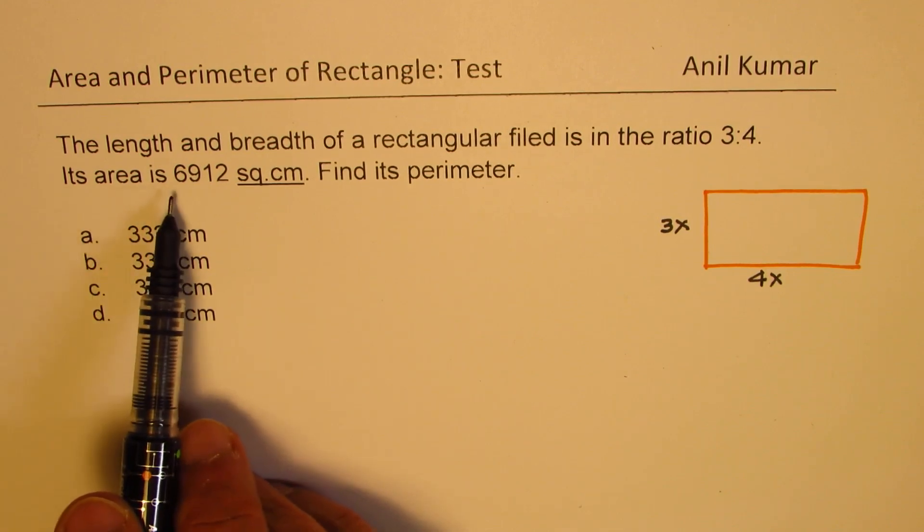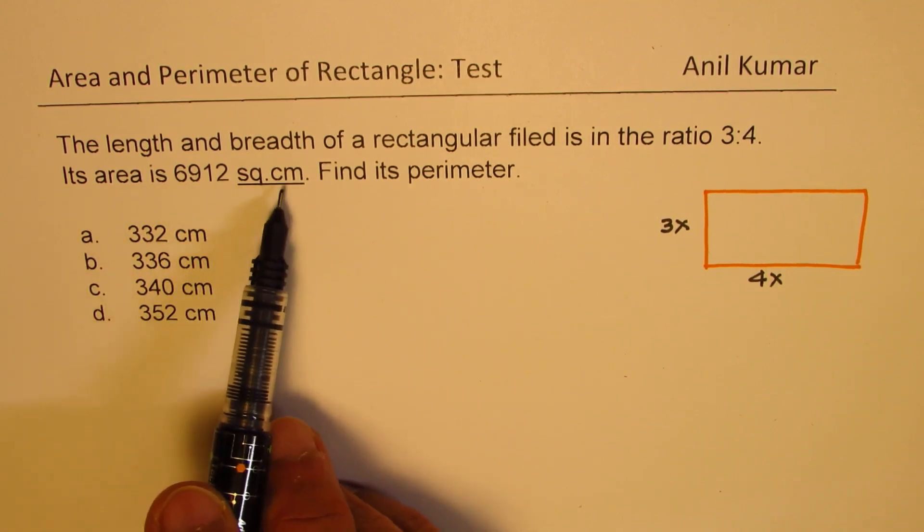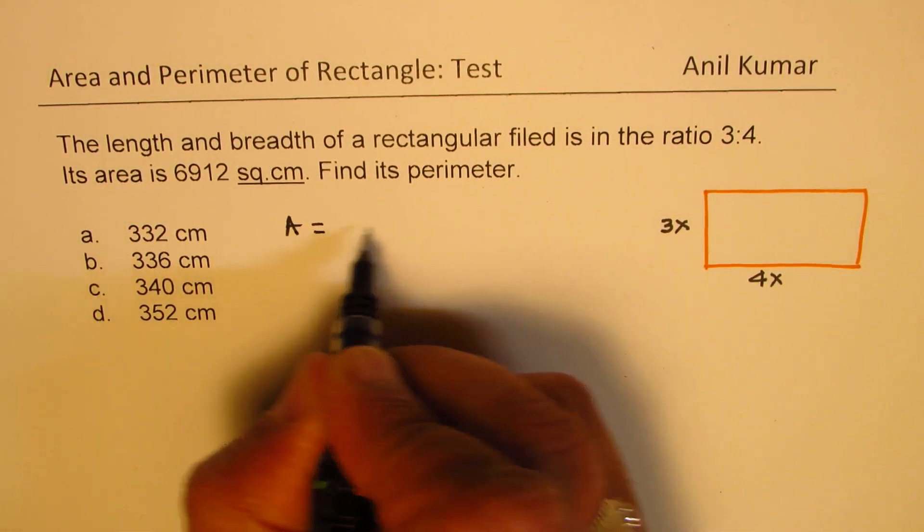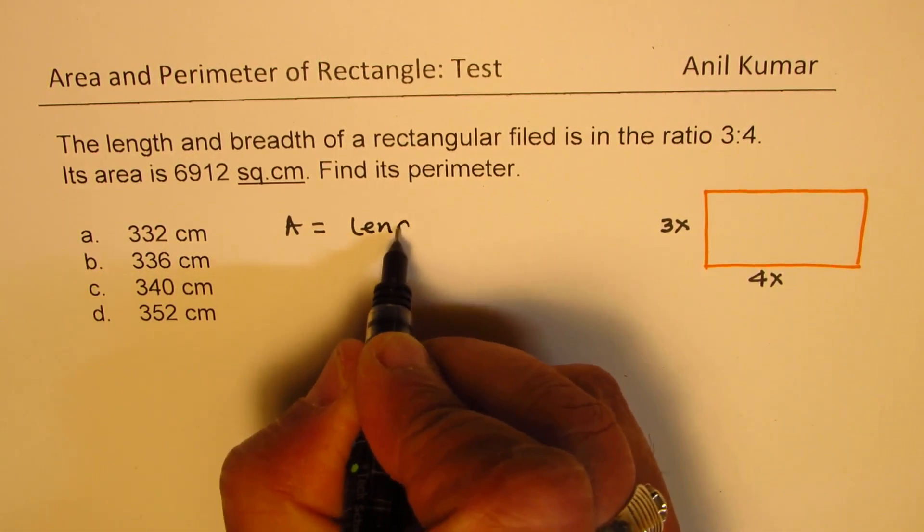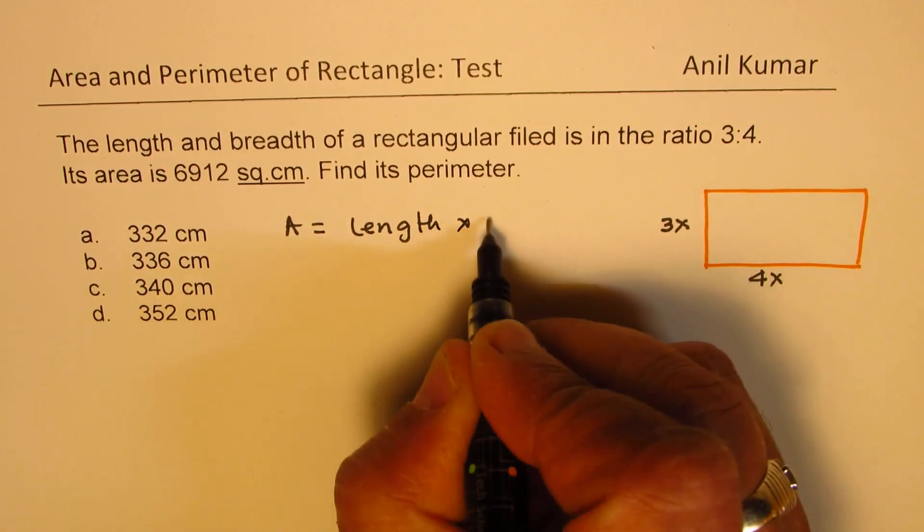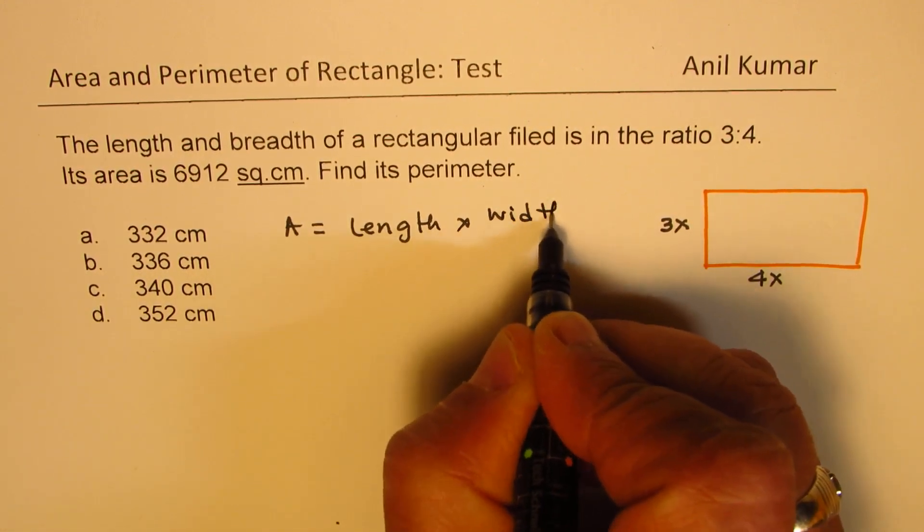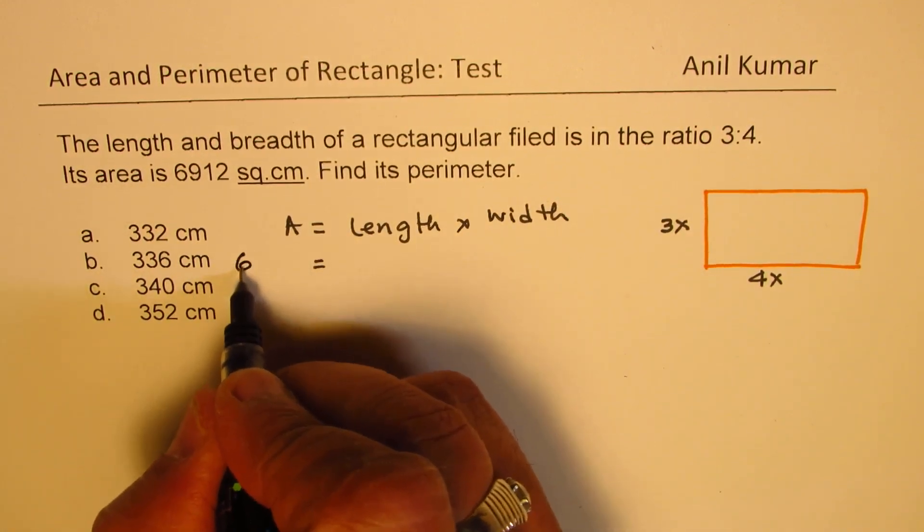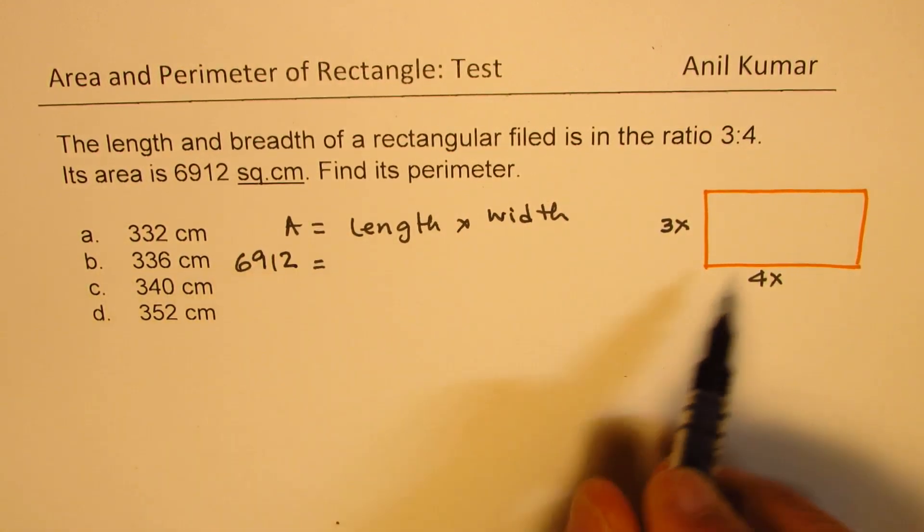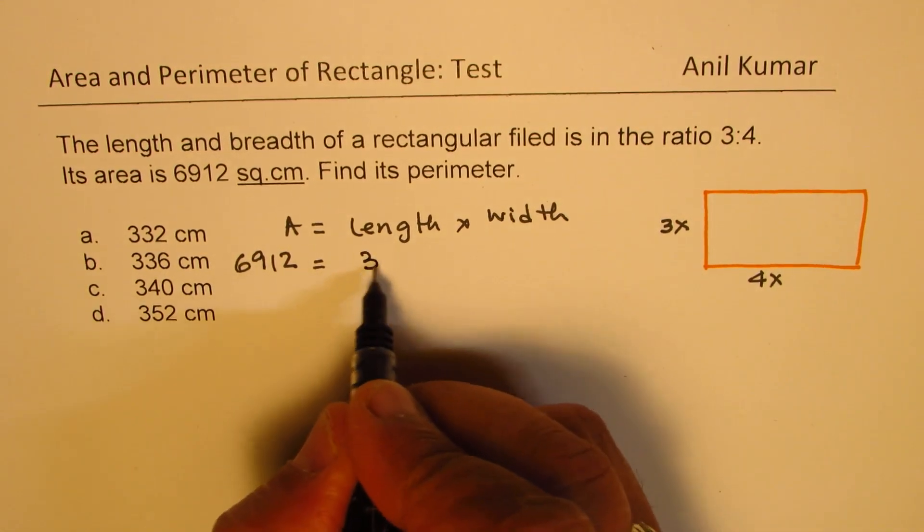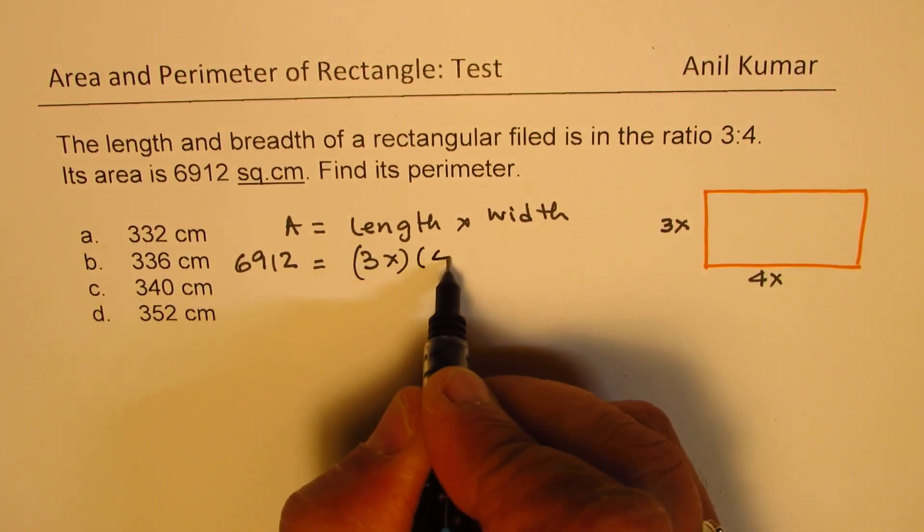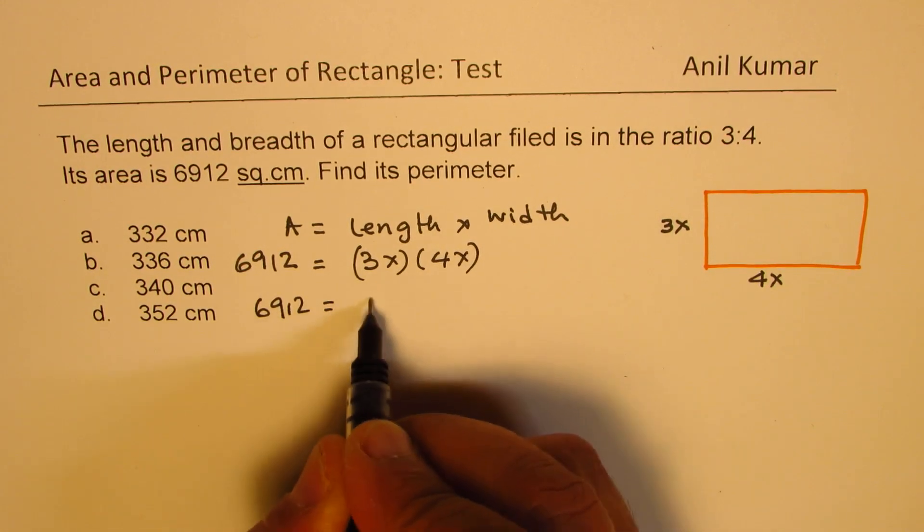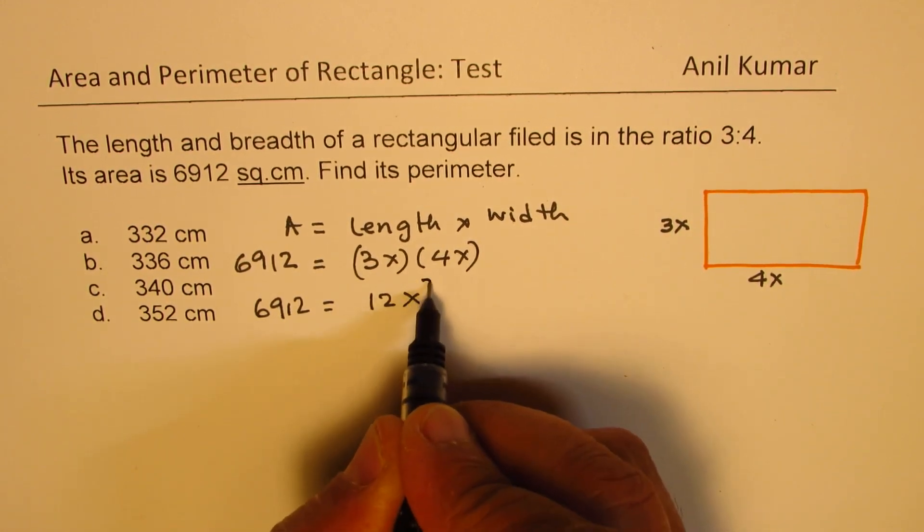Now it's given its area is 6912 square centimeters, find its perimeter. So area, which is length times width, is given to us as 6912 and it should be equal to 3x times 4x. So we have 6912 equals to 12x square.